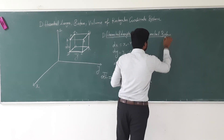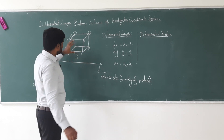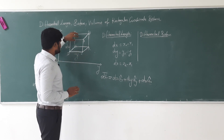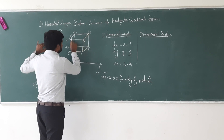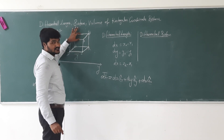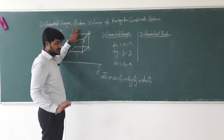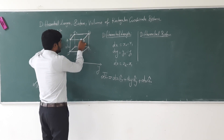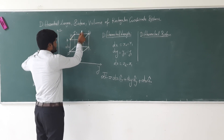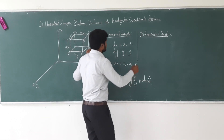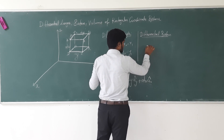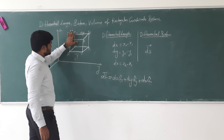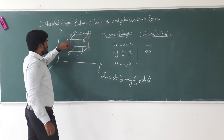Next, differential surface — that is a differential surface area. This portion has six faces, and each face has different values. Surface is also a vector quantity. Consider this portion PQBA: the length is in the x direction and the breadth is in the y direction, so the magnitude of the surface is dx·dy.